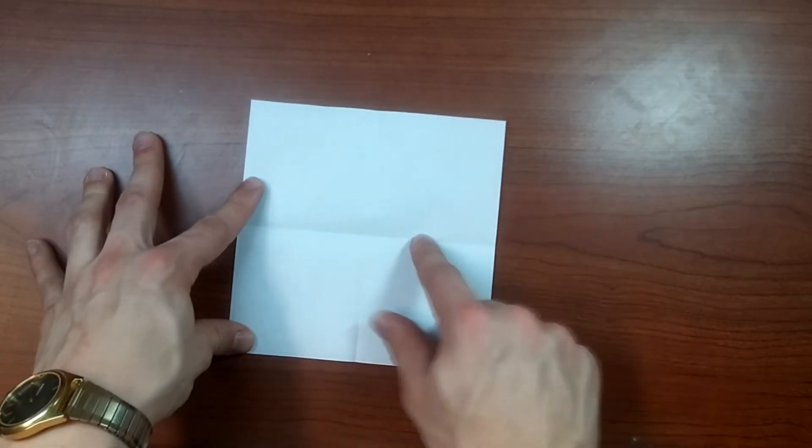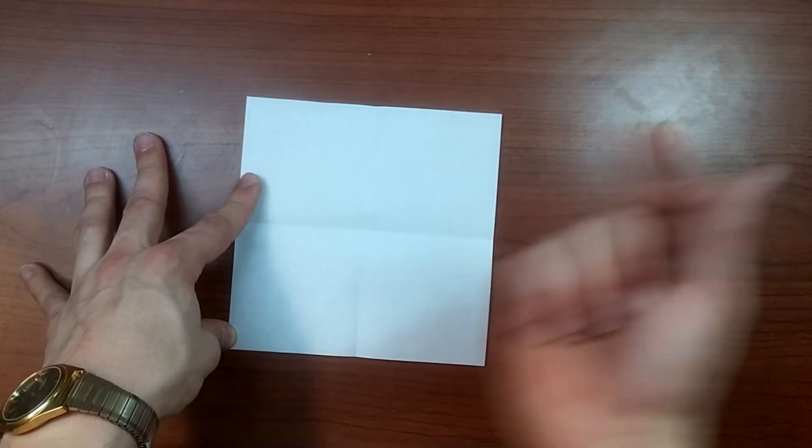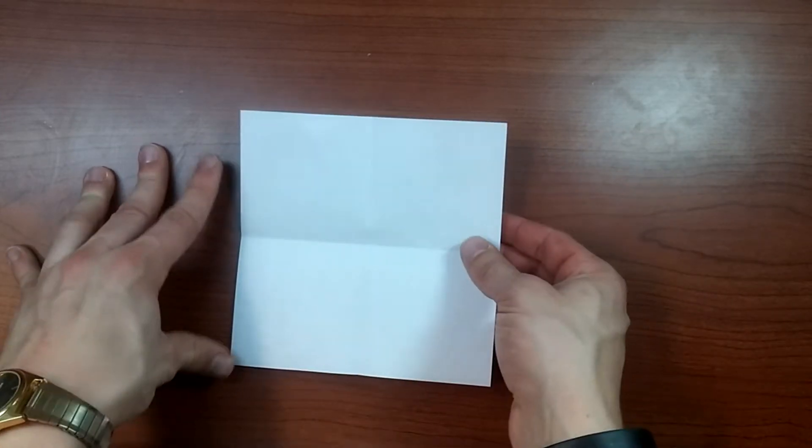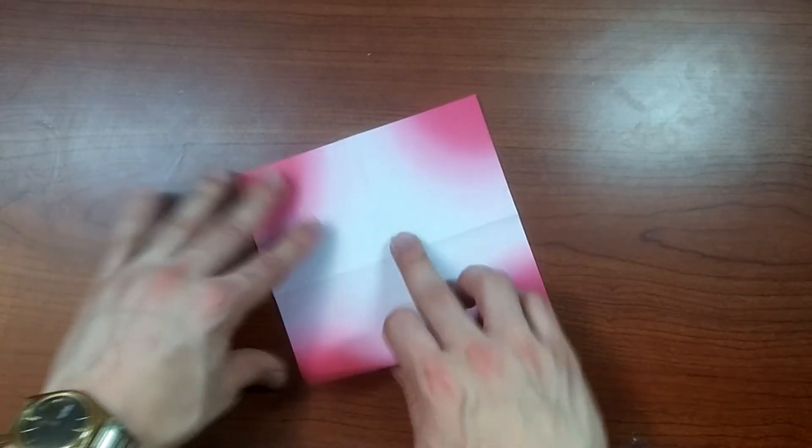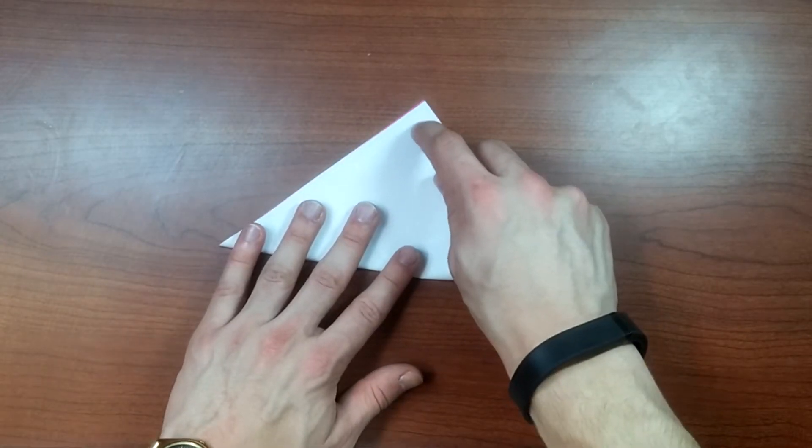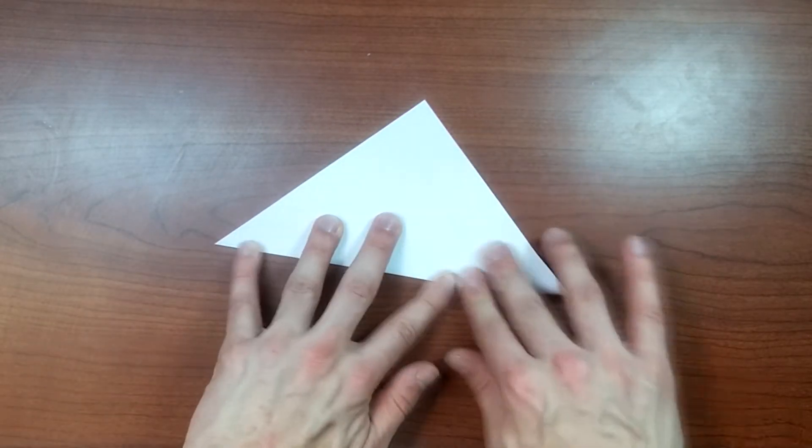First, white side up, fold it in half both ways. I already did that. That's easy though. Next, color side up and again fold it in half both ways only this time diagonally.